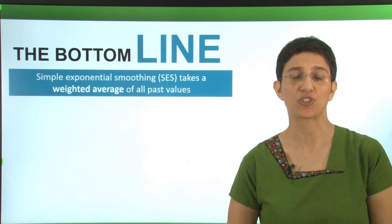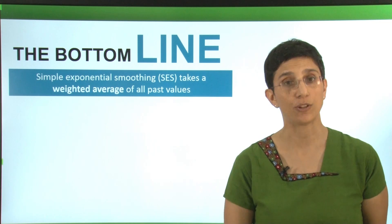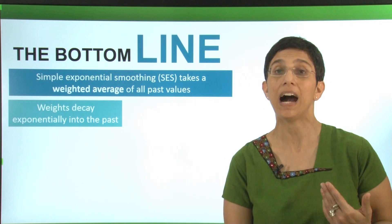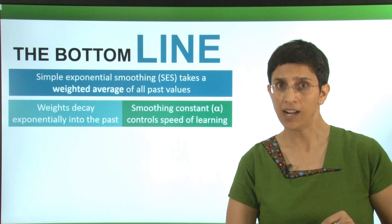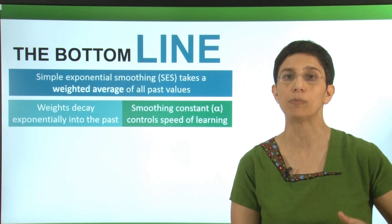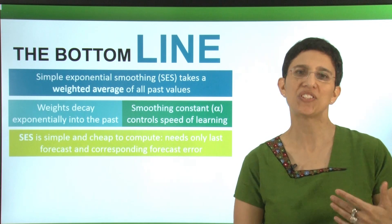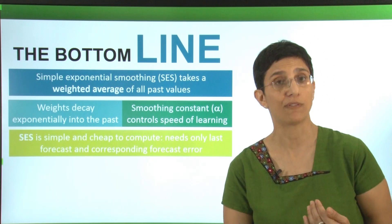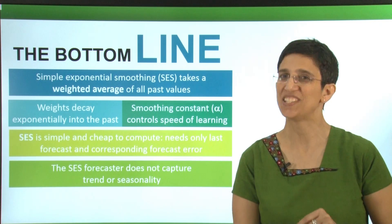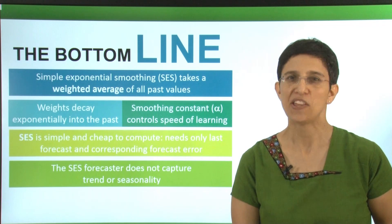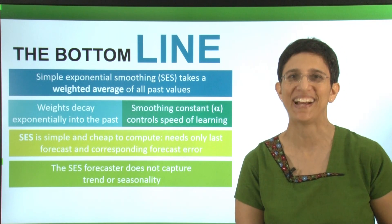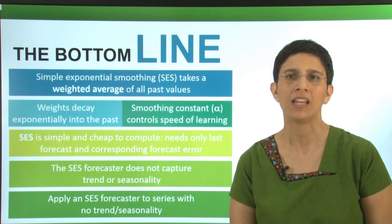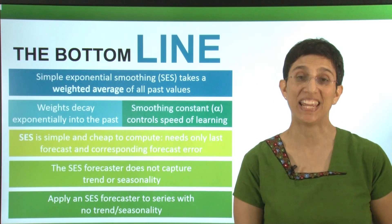The bottom line for simple exponential smoothing is that it simply takes a weighted average of all the values in our series. The weights decay exponentially into the past so that the most recent values get higher weight. The key concept of the smoothing constant is what controls how fast this algorithm learns from new data. The SES is a simple algorithm. It's very cheap to compute because we only need to keep and use the most recent forecast and the most recent forecast error. But realize that it does not capture trend and it does not capture seasonality. Therefore, it won't work very well if you're trying to forecast a series that has trend and has seasonality. That's what we saw in the two examples that we showed earlier.